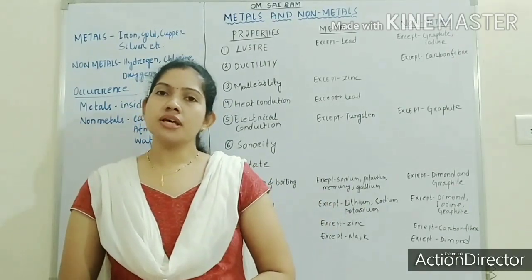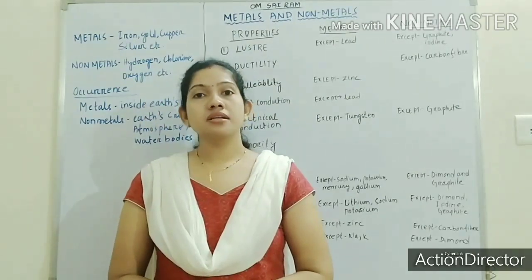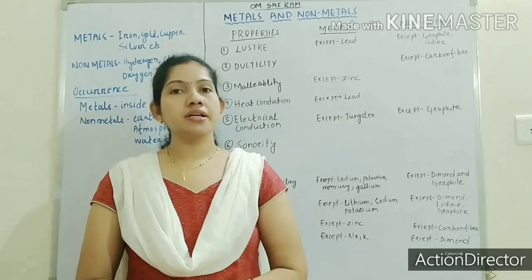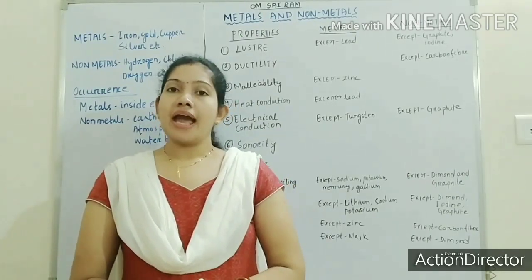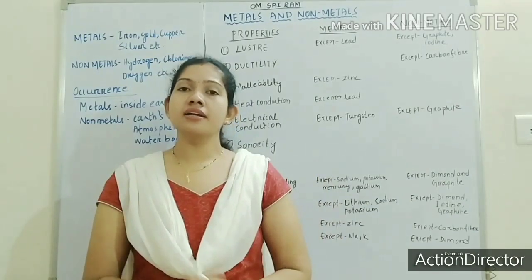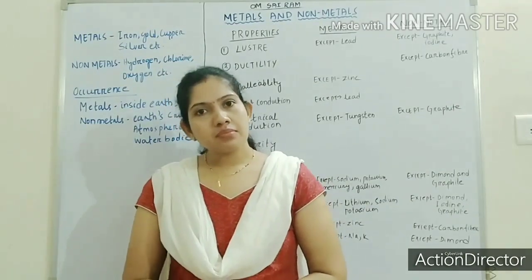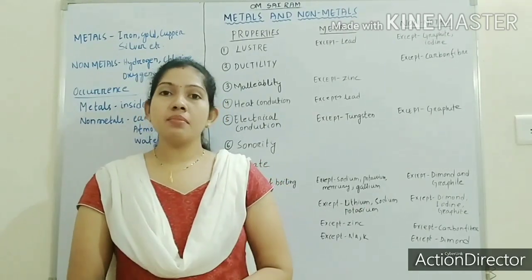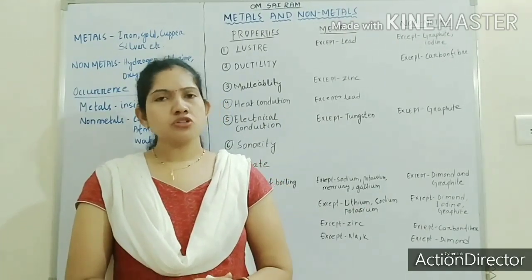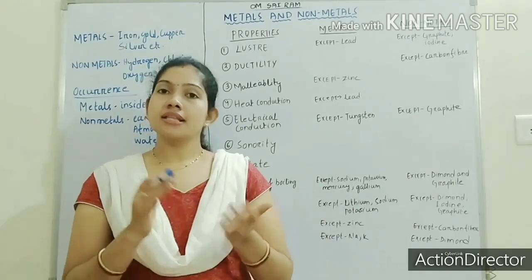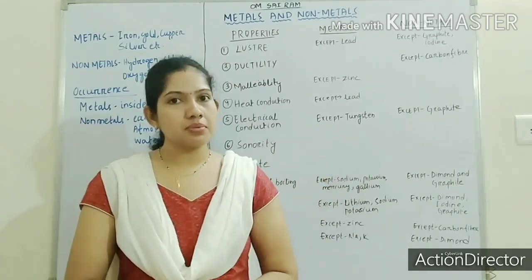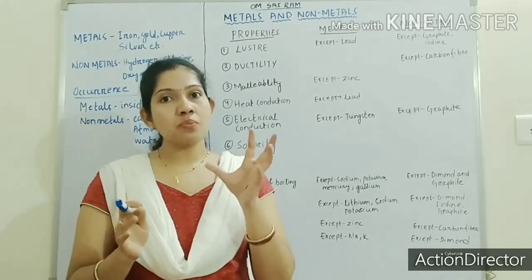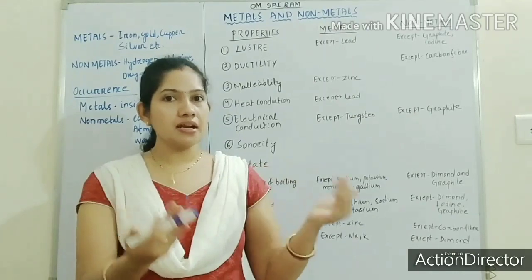As we know, there are 118 elements present on Earth. From those 118 elements, some are metals, some are non-metals, some are metalloids, and some are noble gases. Based on their physical and chemical properties, they are placed in the periodic table. We have already discussed the periodic table and we will again discuss the placement of metals and non-metals in our next video.